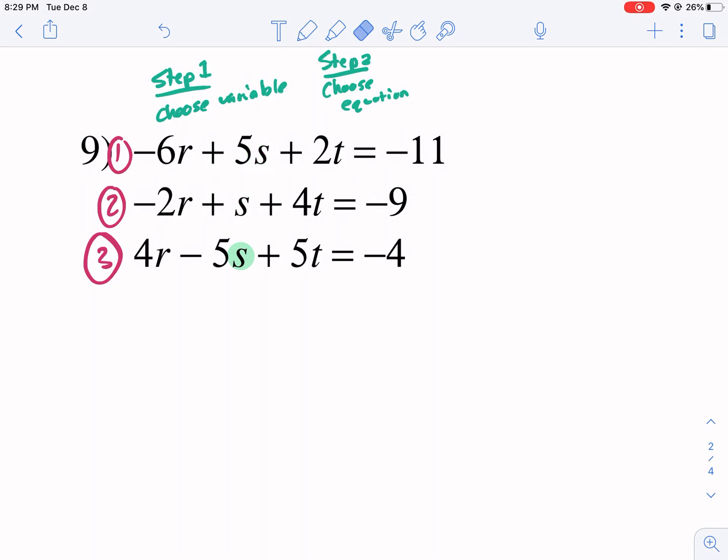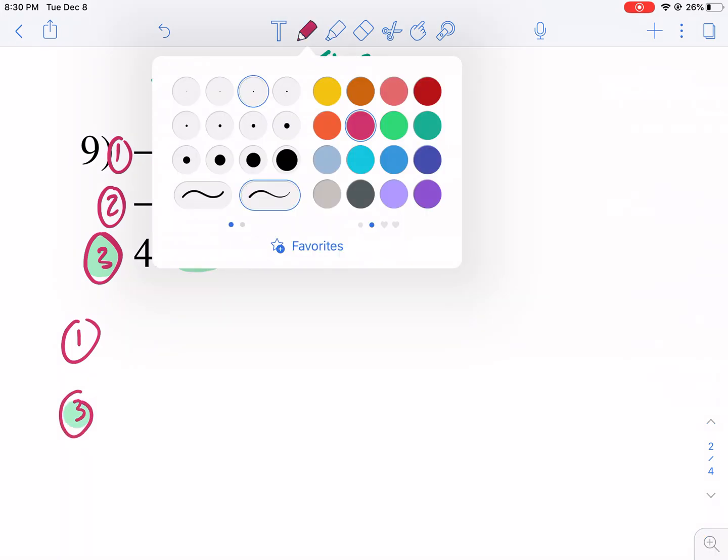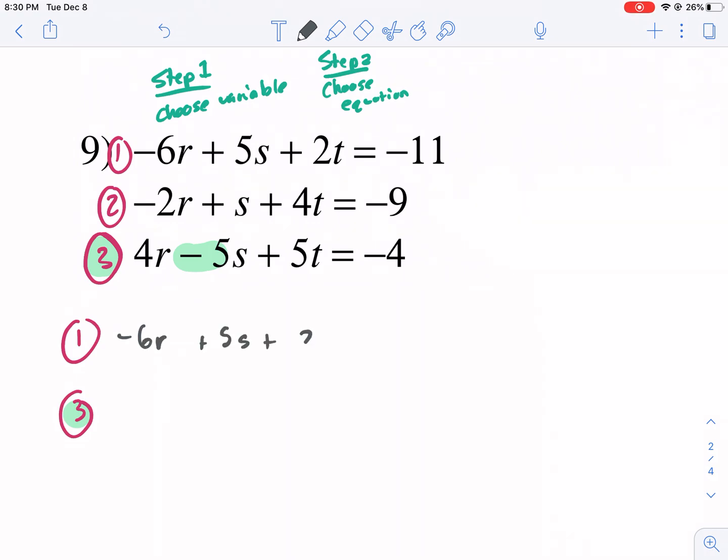Now, in this case, I think the best decision is to choose this guy as your working equation because he's already negative and these two are positive. And he could easily eliminate with the first equation. So let's go ahead and start with three and one. I should always put the working equation on the bottom. So let's rewrite this guy. Negative six R plus five S plus two T equals negative 11. That's number one. You're going to need lots of paper. I hate how the fives look like S's.